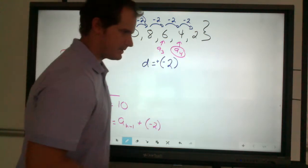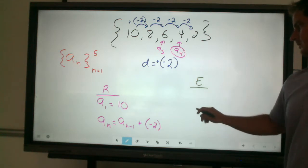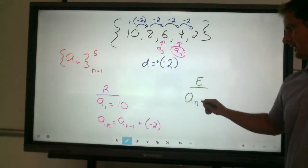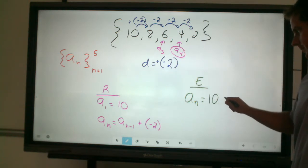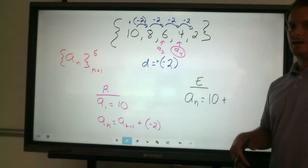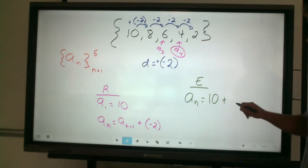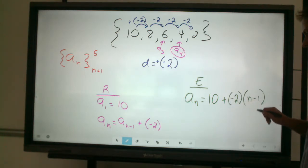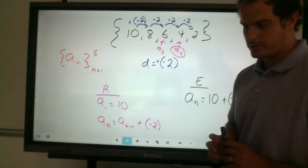Lastly, for an explicit way to write this, to find any term, any nth term in the sequence, we establish what the first term is, plus the product of the common difference and the previous term, which in this case happens to be negative 2 times the previous term. And that's kind of how I write it. I prefer to keep that in parentheses as well, just kind of show that ownership for that negative 2.